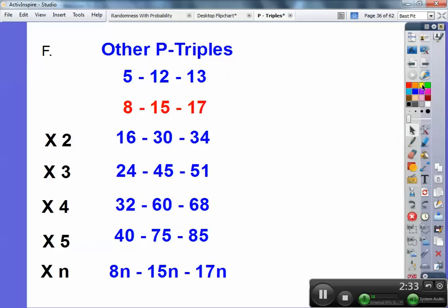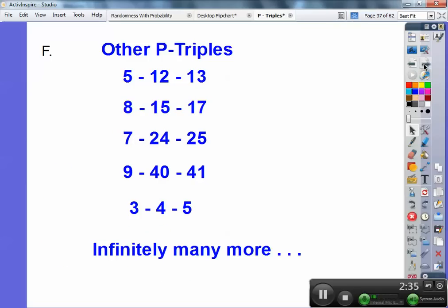Okay, so those are all P-triples right there. All right, let's do some more. 7, 24, 25 is also a common P-triple. They're sides of a right triangle. And 9, 40, 41 is also. So there's infinitely many more.